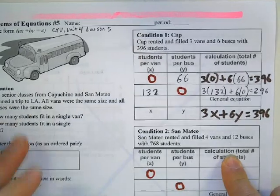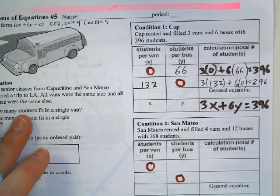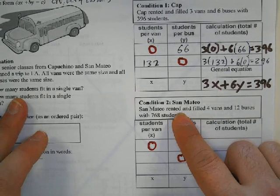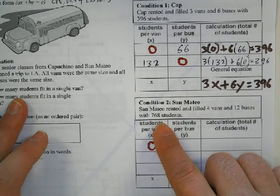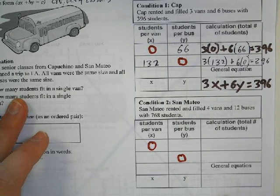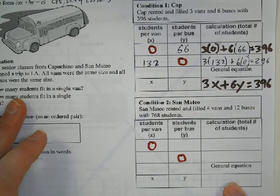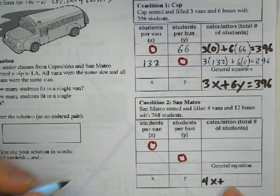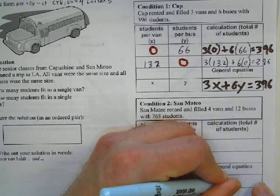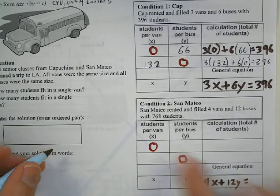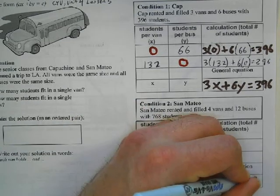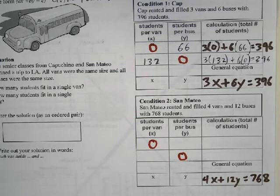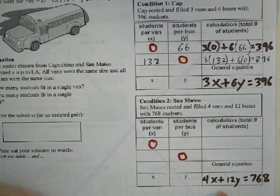Same situation: San Mateo rented four vans and 12 buses, and they had this many students. So I'm going to write the equation first. Four vans, so we're going to have 4x plus, and we've got 12 buses, so we've got 12y, and together that adds up to 768.